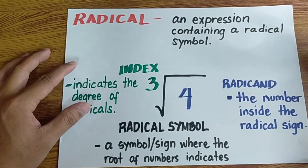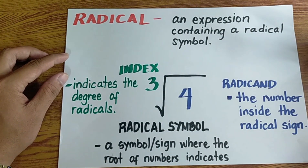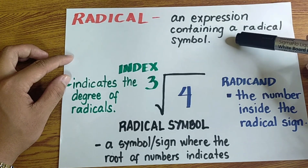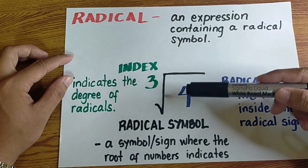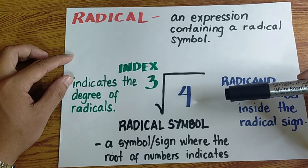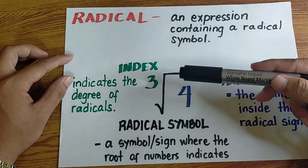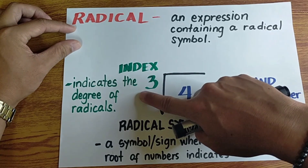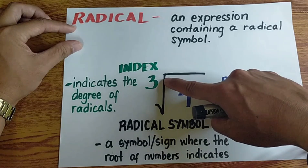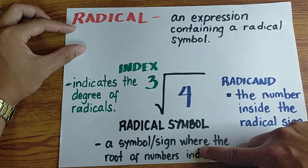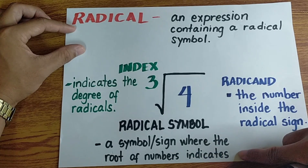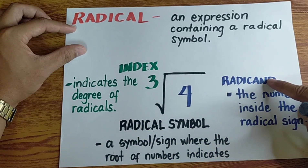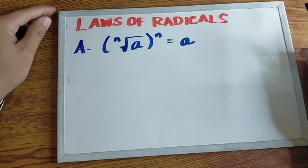In this video we will discuss the laws of radicals. But before that, let us try to understand what is a radical. Based on my definition, a radical is an expression containing a radical symbol — like for example, cube root of 4. The number 3 here is what we call the index, which indicates the degree of the radical. This symbol is the radical symbol, and the number or expression inside it is what we call the radicand.